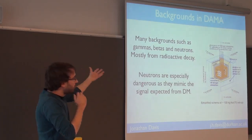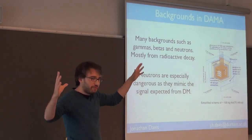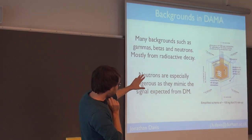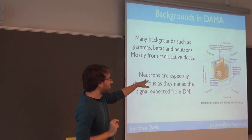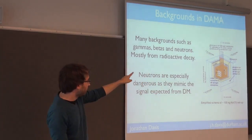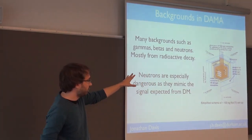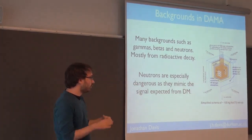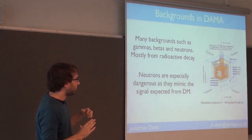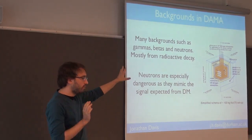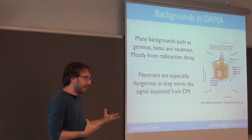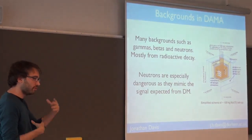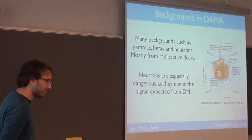What else will give you events in something like DAMA? It's behind a mountain with all that shielding — surely nothing else can get in. There are things that can get in, mostly from radioactive decay, which gives a constant event rate. The most dangerous thing is neutrons, because they also give nuclear recoils that look quite similar to what you'd expect from dark matter. They can come from alpha decay and so forth — decay in the shielding — but decay is a constant thing, so it wouldn't give you an annual modulation. The main backgrounds are radioactive decay or cosmogenic isotopes.